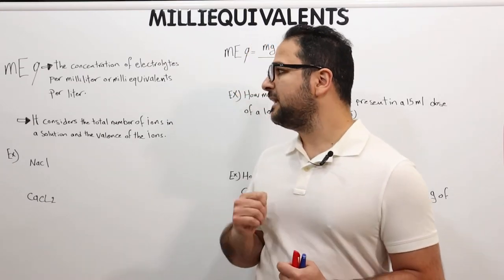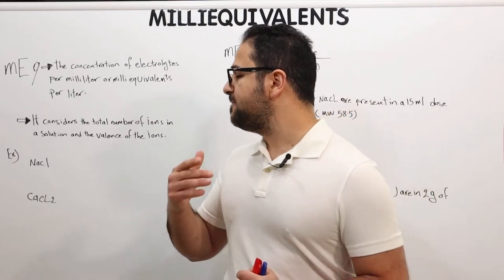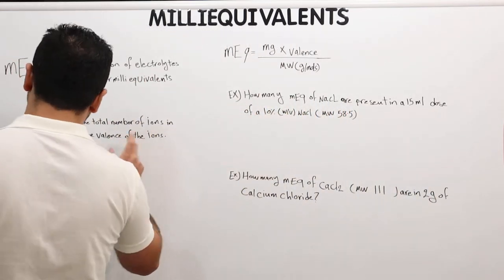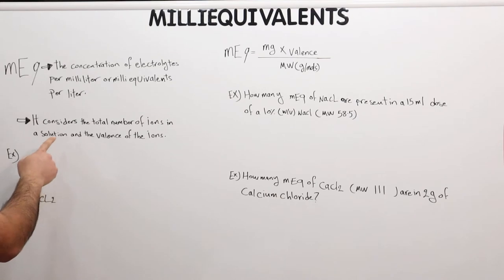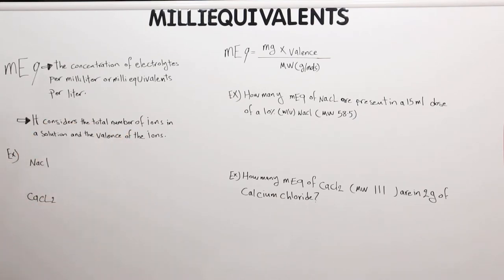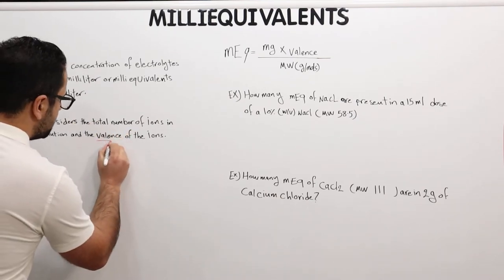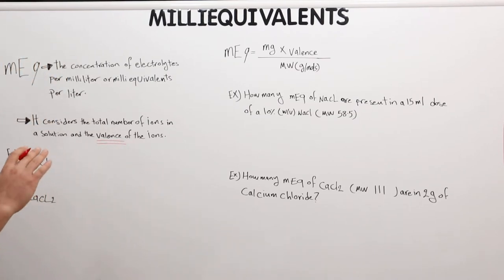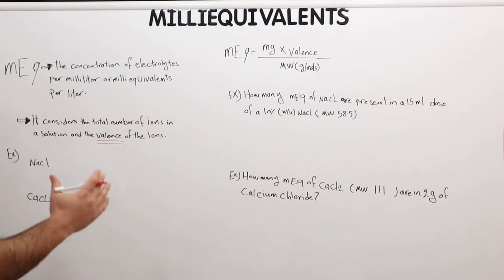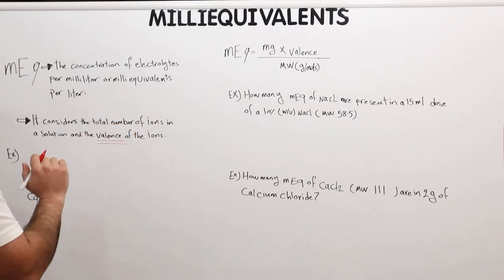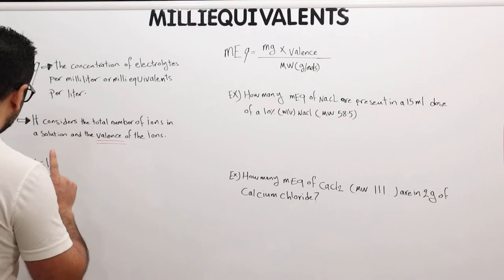When it comes to milliequivalent, it basically considers the total number of ions in a solution and the valence of the ions. So what do I mean by the valence of the ions? In a previous lecture we discussed the number of particles — today we're going to go over the valence of the ions.